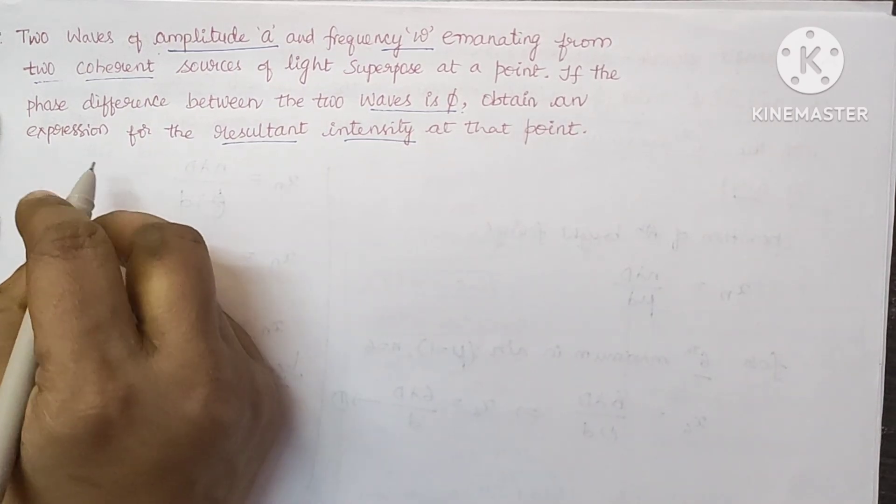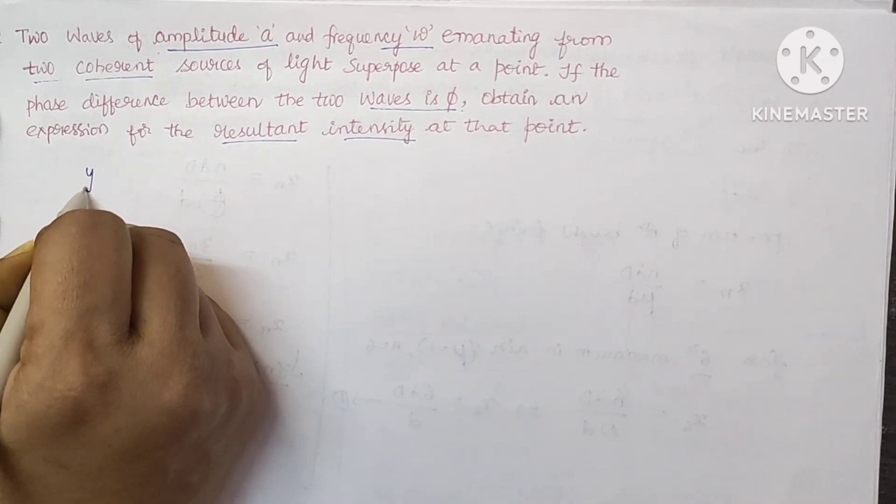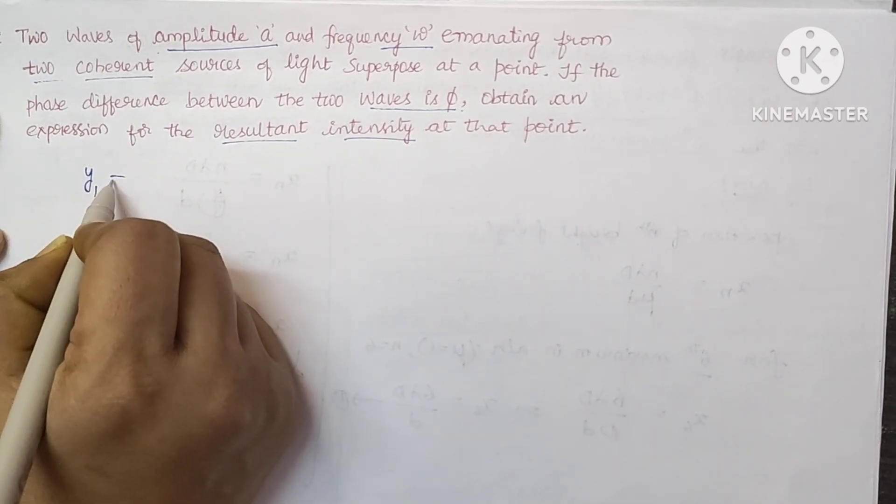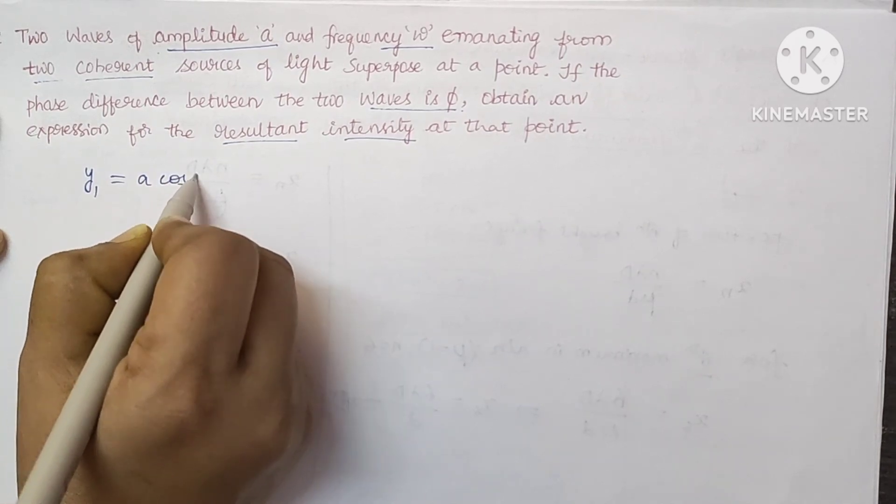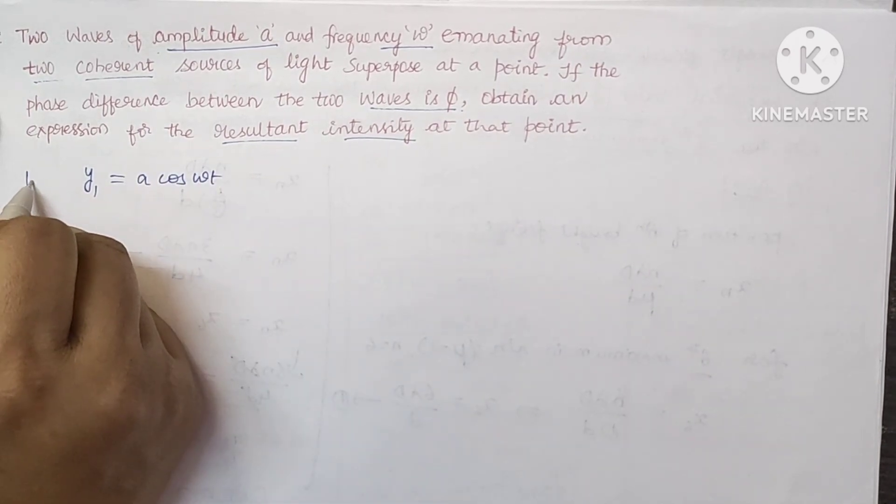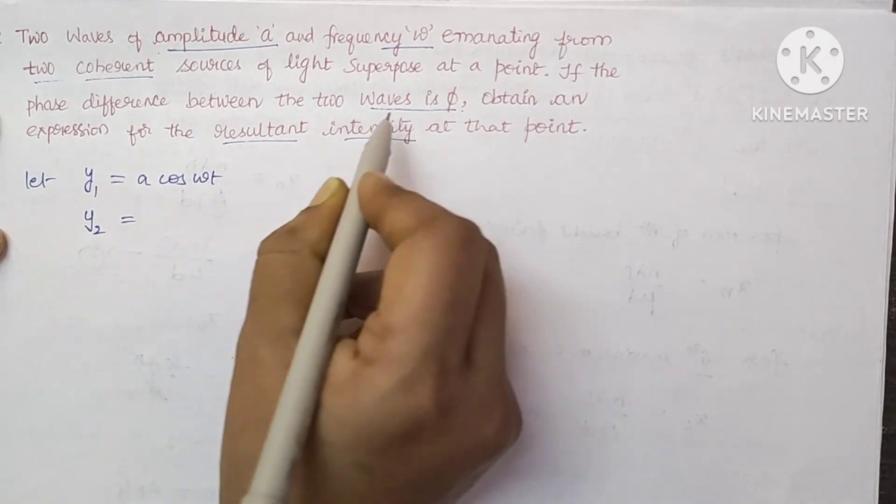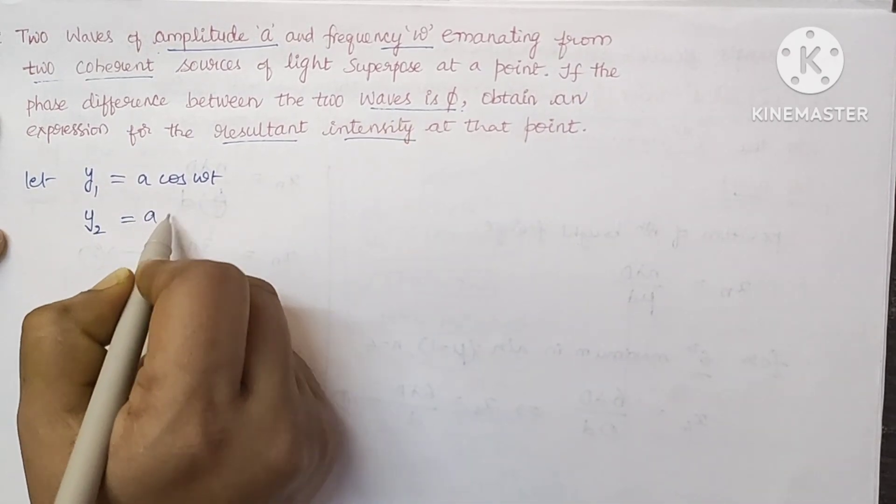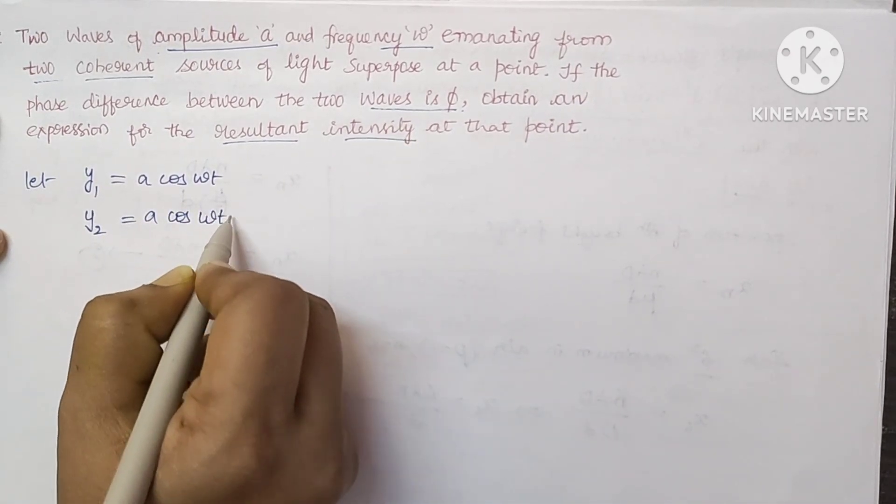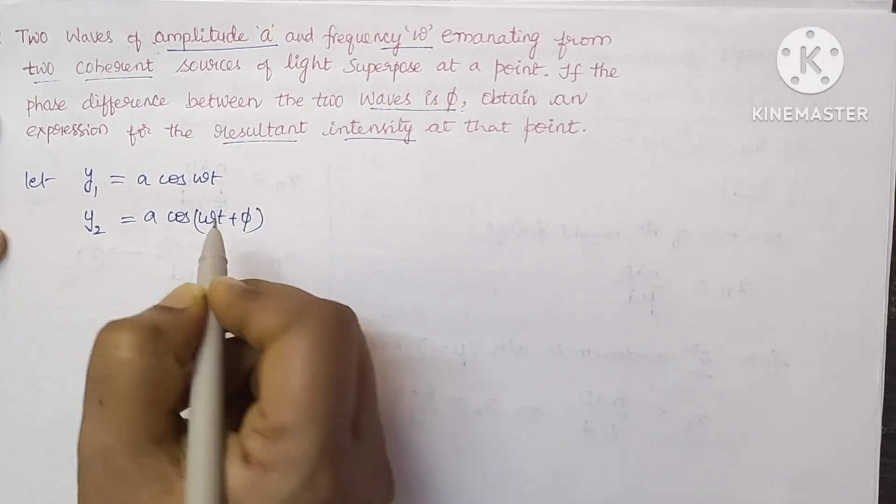Let's see. Consider the first wave which displacement is y equals A cos omega t. And the second wave, both waves have the phase difference phi, so A cos omega t plus phi.